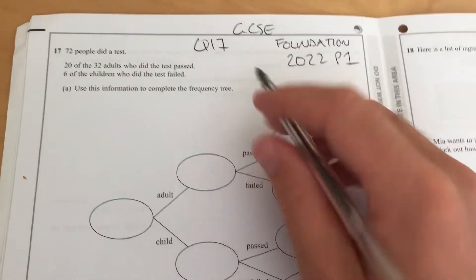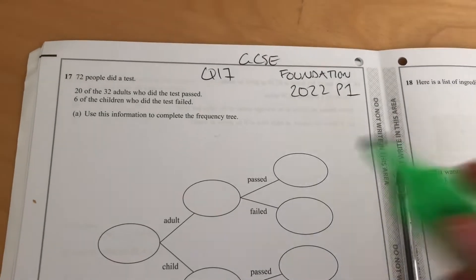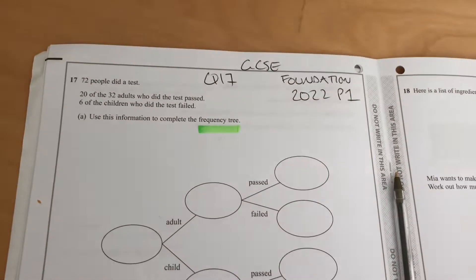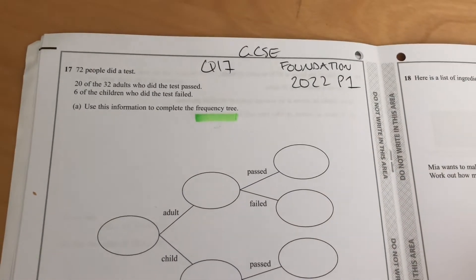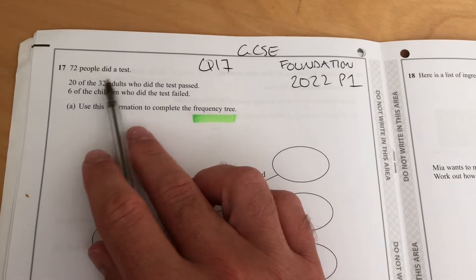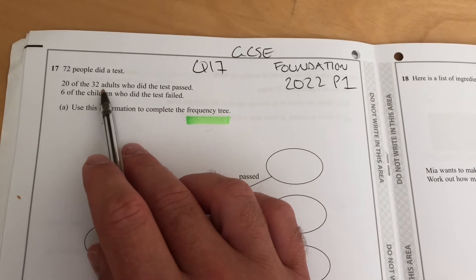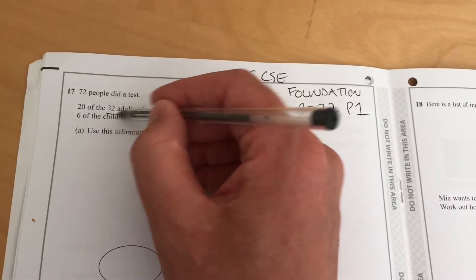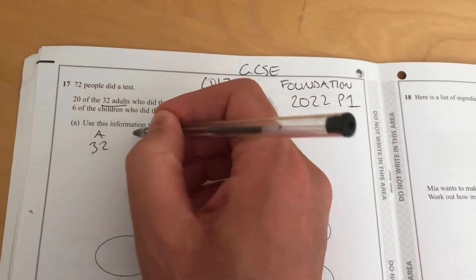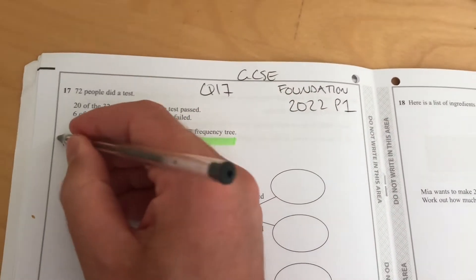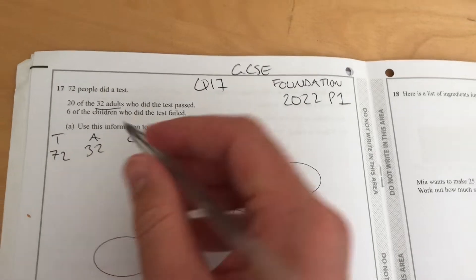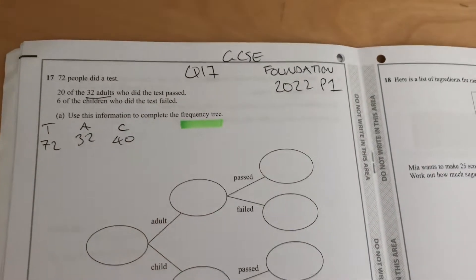It is a frequency tree question, not a probability tree, so we're looking for the numbers involved. 72 people did a test, so that should be the starting number. 20 of the 32 adults—so in order to know that there are 32 adults, children should be: total is 72, 72 minus 32, children will be 40.